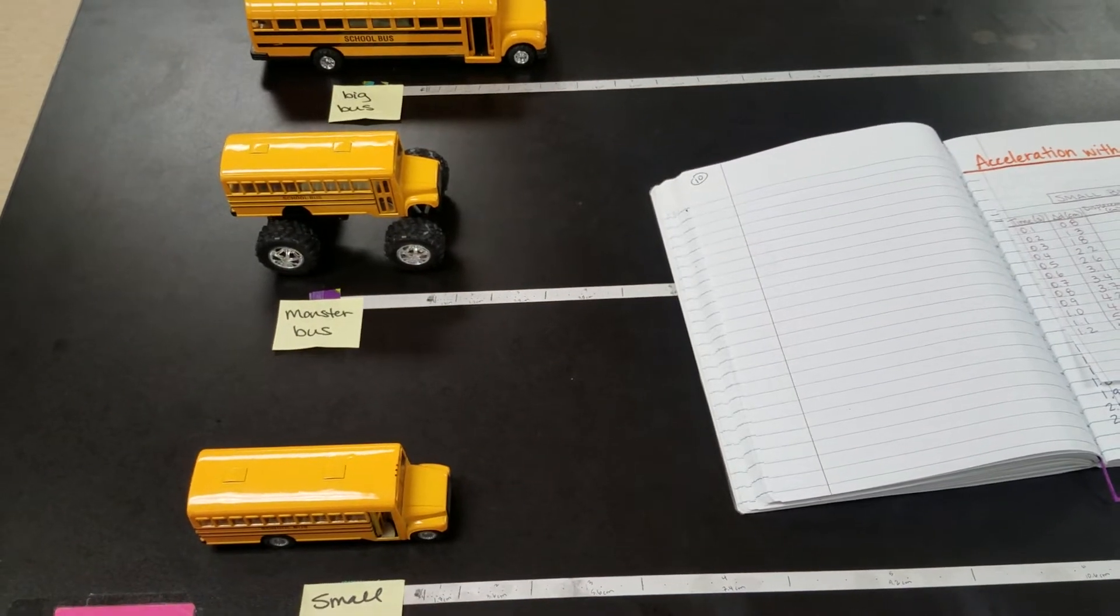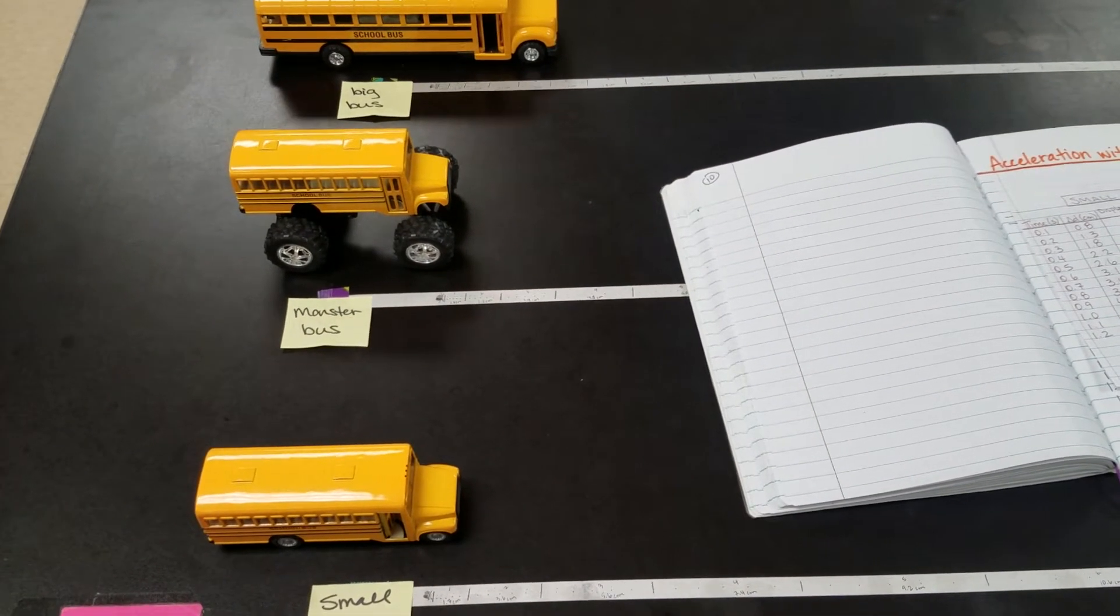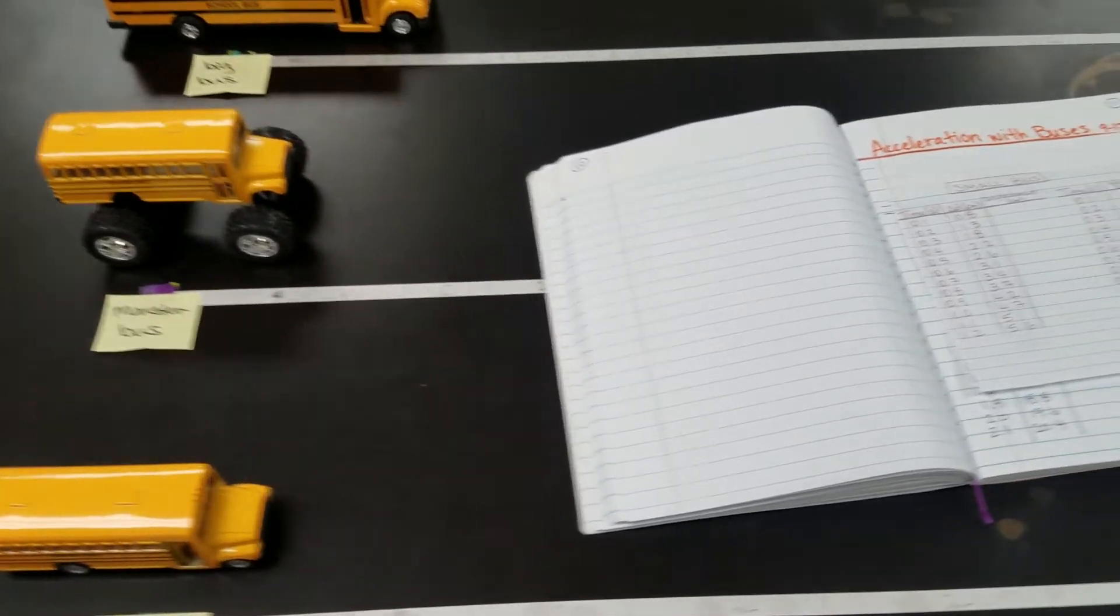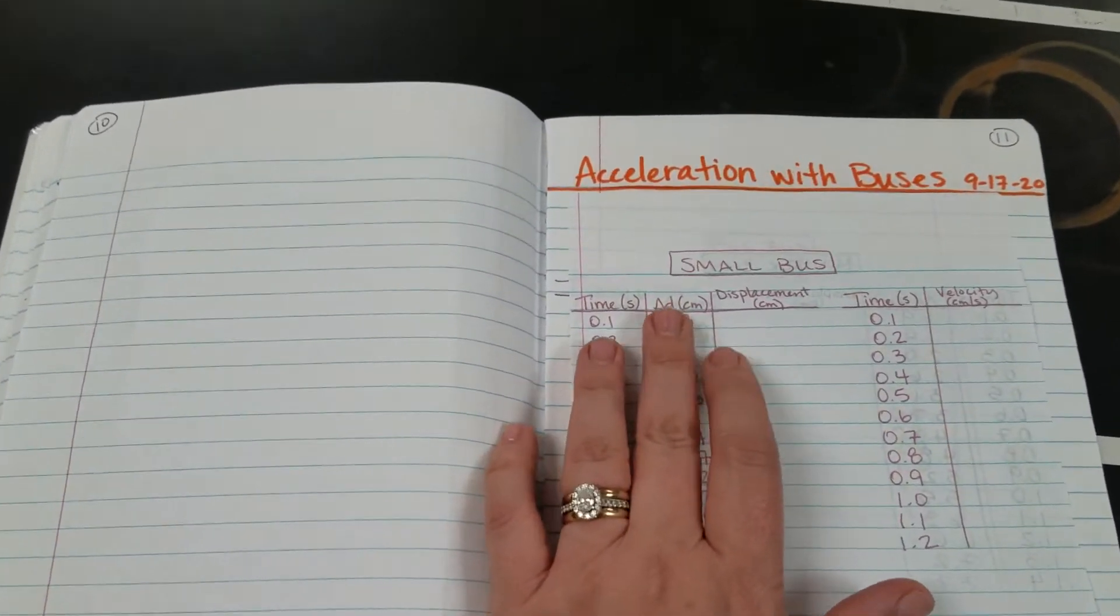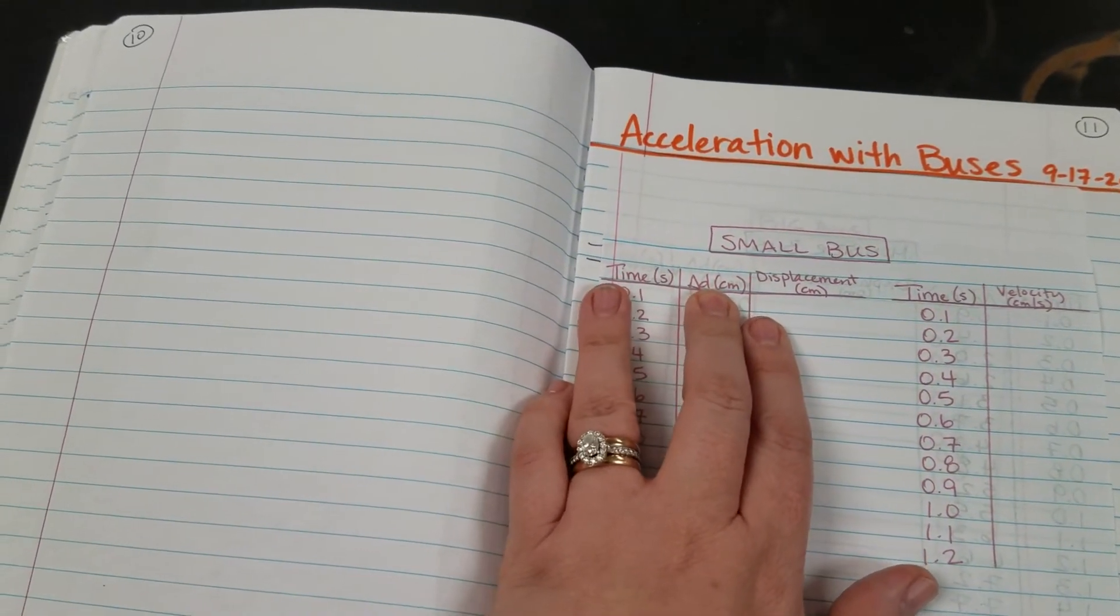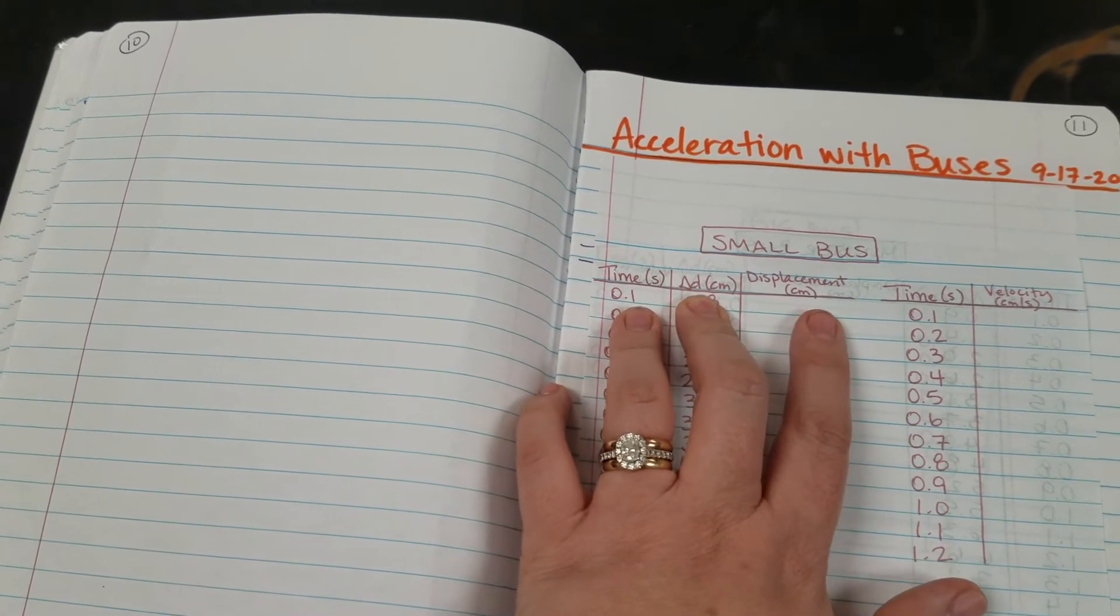Have your journal set up so now we're going to do some data collection. You're going to be writing this in your journal in the very first data chart that's labeled time, delta D, and displacement.